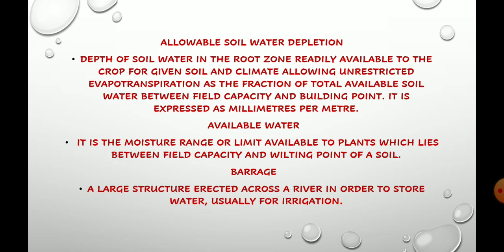The next term is allowable soil water depletion. It is the depth of soil water in the root zone readily available to the crop for a given soil and climate, allowing unrestricted evapotranspiration, expressed as a fraction of total available soil water between field capacity and wilting point. It is expressed in millimeters per meter.